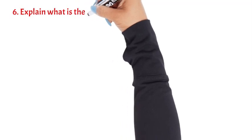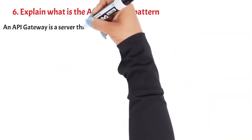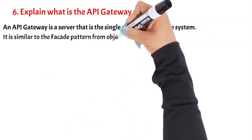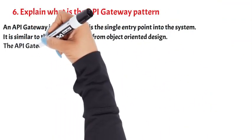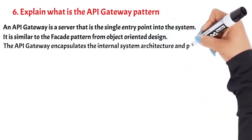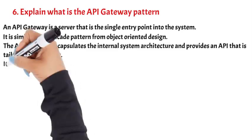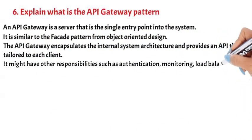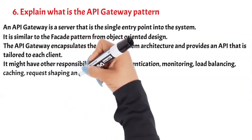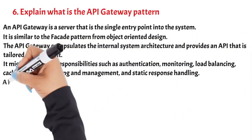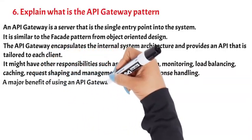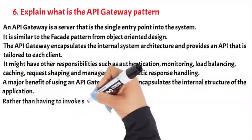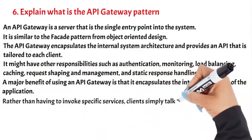Question 6: Explain what is the API Gateway pattern. An API Gateway is a server that is the single entry point into the system. It is similar to the facade pattern from object-oriented design. The API Gateway encapsulates the internal system architecture and provides an API that is tailored to each client. It might have other responsibilities such as authentication, monitoring, load balancing, caching, request shaping and management, and static response handling. A major benefit of using an API Gateway is that it encapsulates the internal structure of the application. Rather than having to invoke specific services, clients simply talk to the Gateway.